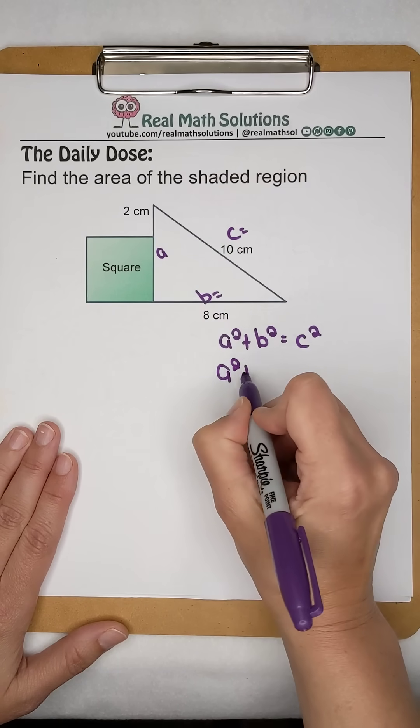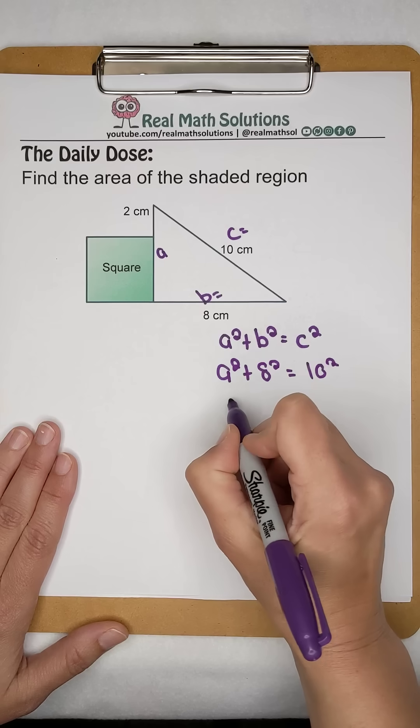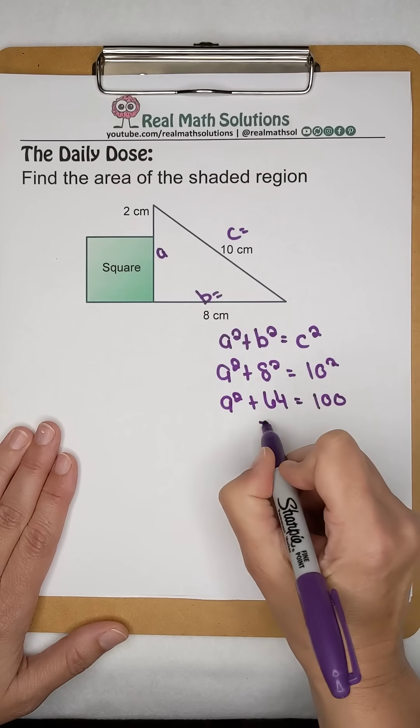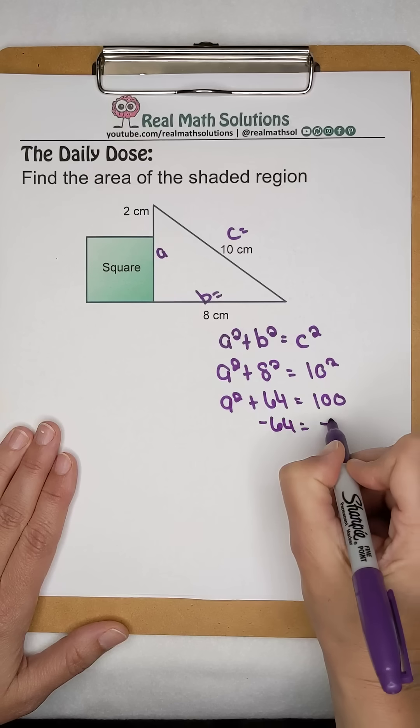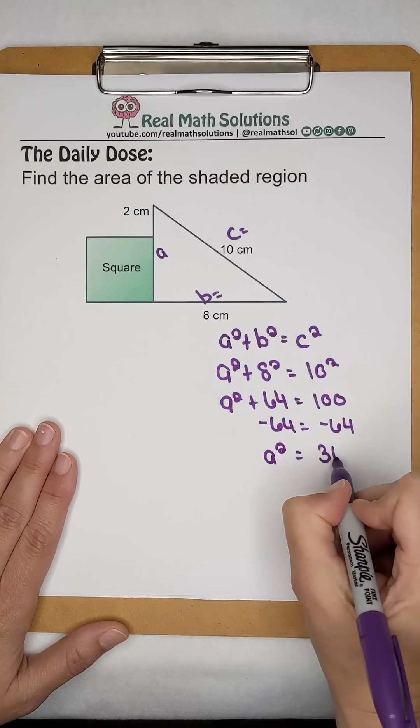So a² is what we're looking for, 8² and 10². When we evaluate that, we have a² + 64 = 100. We're going to subtract 64 from both sides. And when we do, that leaves us as a² being worth 36.